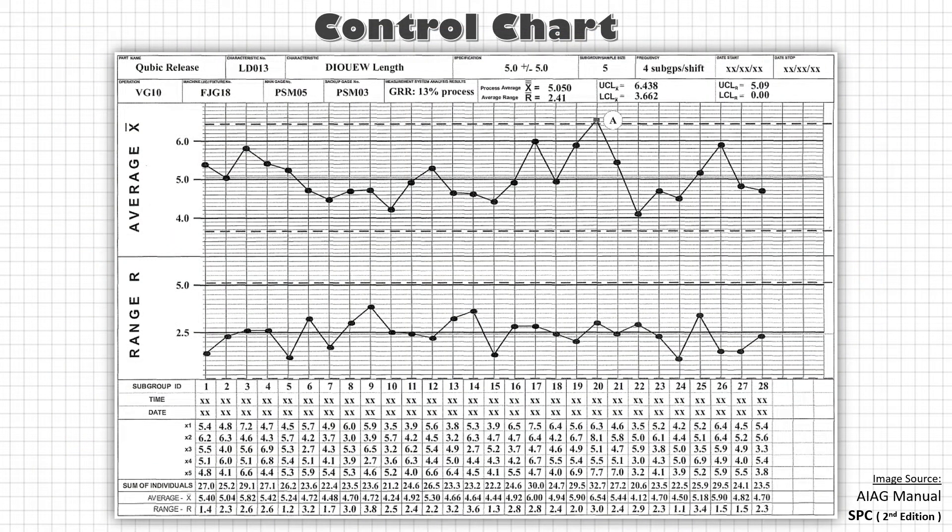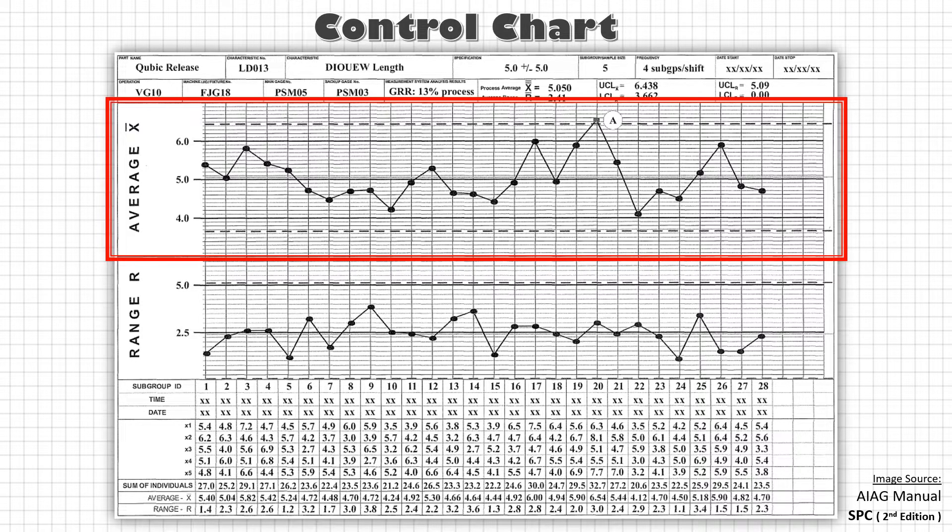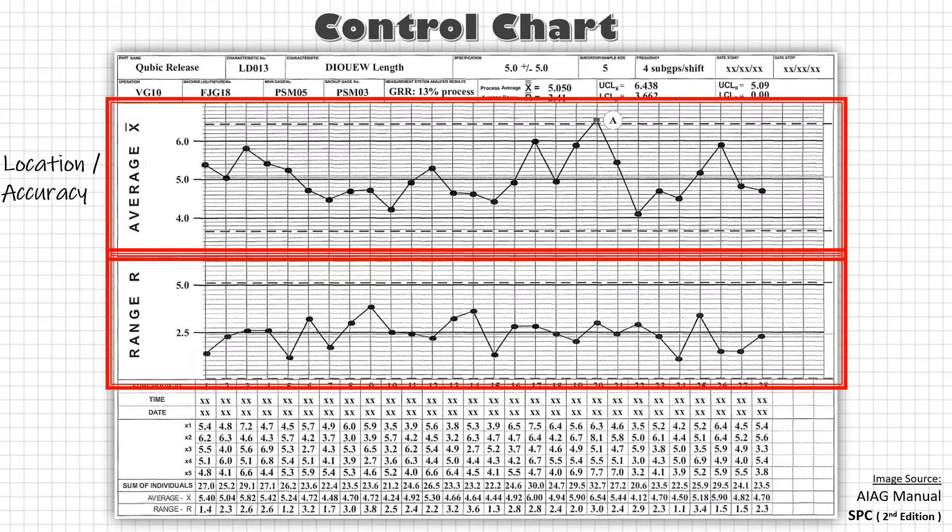In the last video, we understood the different parts of control chart which includes x bar chart that represents the location or accuracy of the process and range chart that represents the spread or precision of the process.